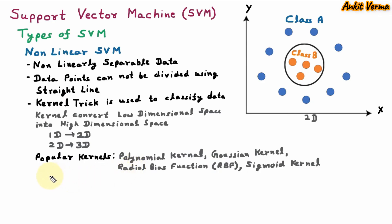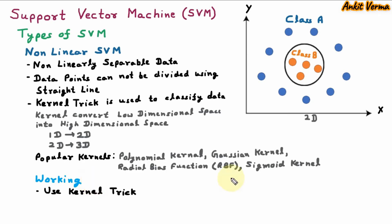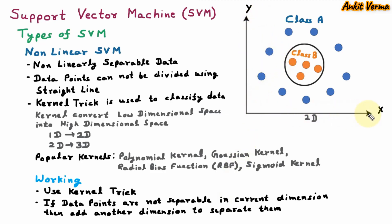Now we are learning the working of Non-linear SVM. In Non-linear SVM, the data points are not separated by a straight line, so we use the kernel trick. The kernel trick says if data points are not separable in the current dimension, then add another dimension to separate them. In the diagram, we have a two-dimensional space where data points are not linearly separable. So we need to convert 2D to 3D so that they can be separated. This conversion is done by the kernel and is called mapping. We are first learning the mapping of 1D to 2D.